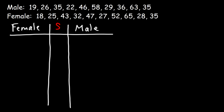Let's start with the ages of the males. The lowest age is 19. So the first digit, 1, we're going to put in the stem column. The second digit, 9, we're going to put in the male column. Here's our key: 1 | 9 corresponds to 19.